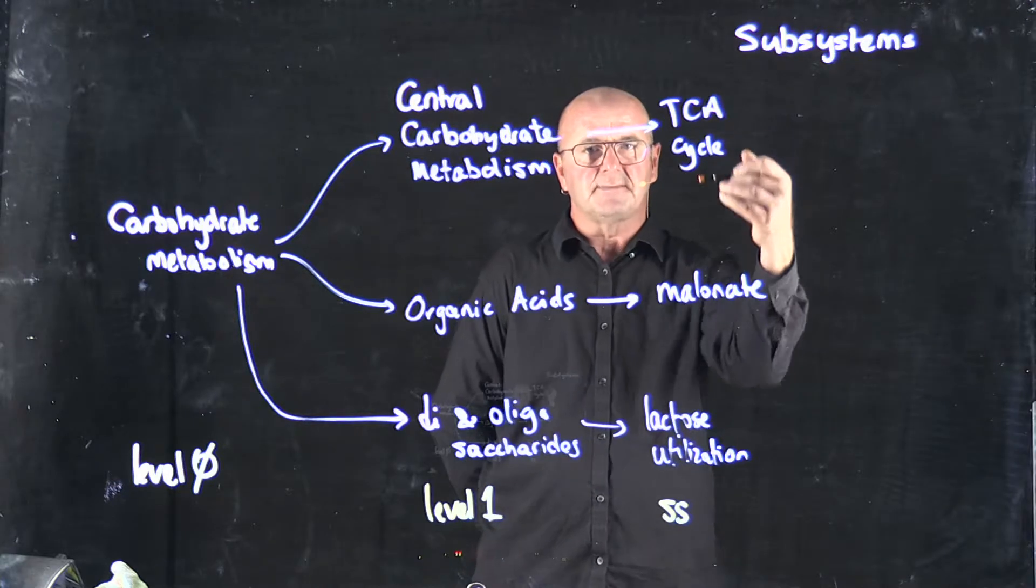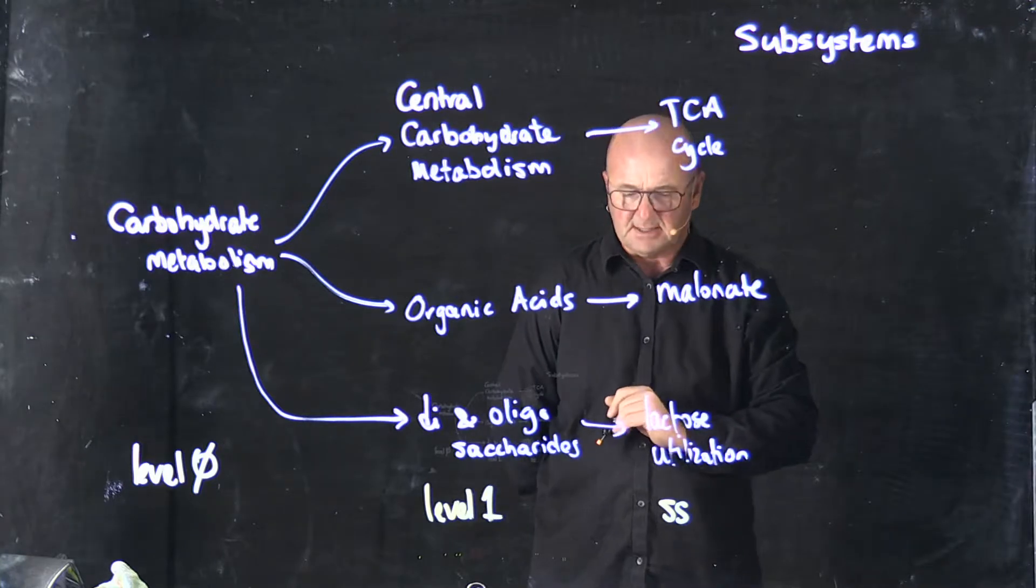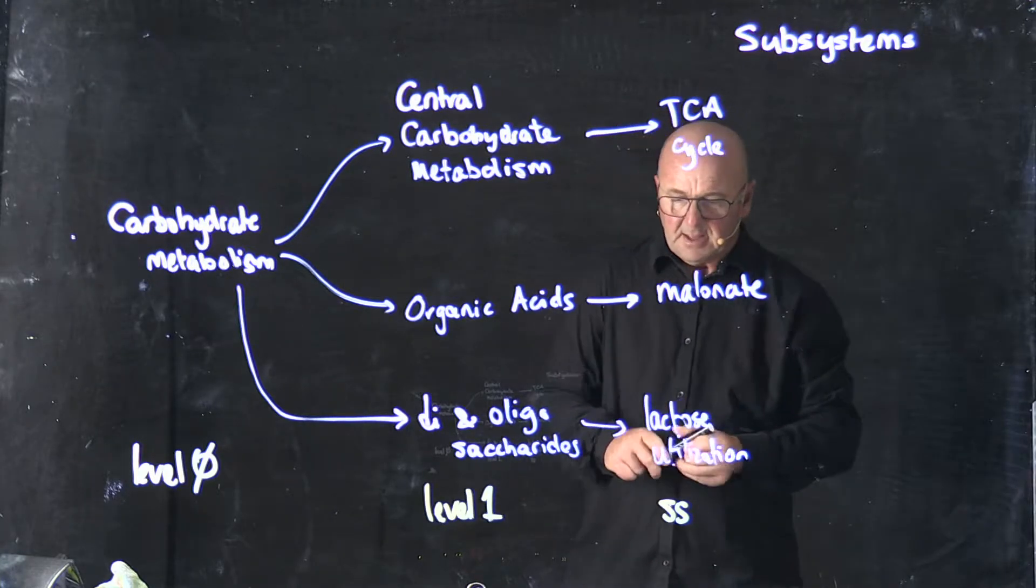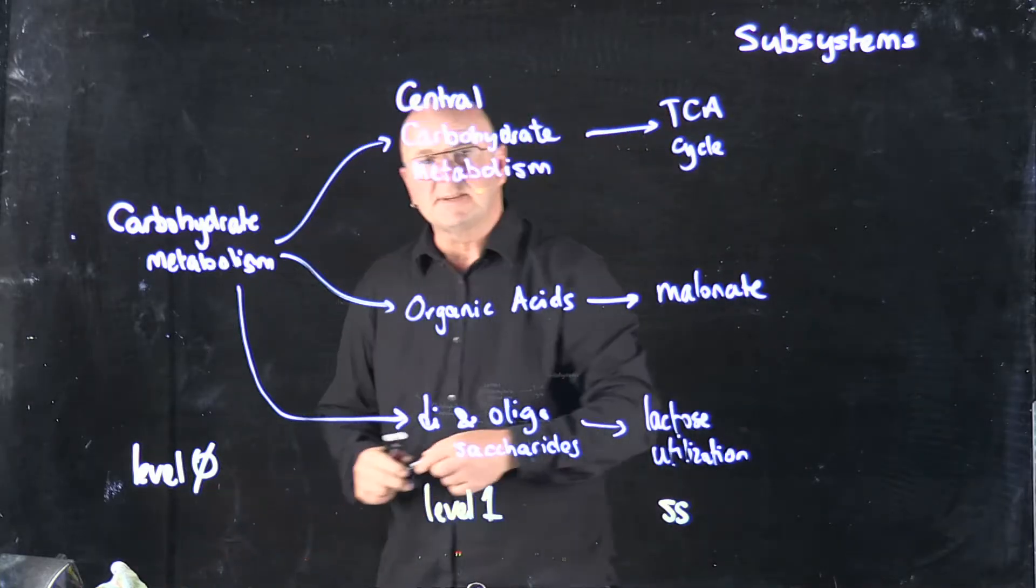And so the TCA cycle is a subsystem, malinate utilization is a subsystem, lactose utilization is a subsystem. And then within the subsystem, we're going to have a series of functions.